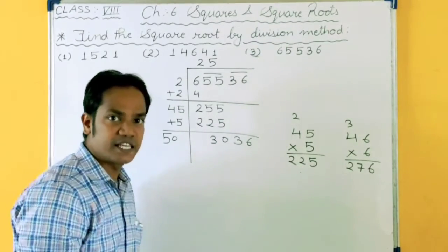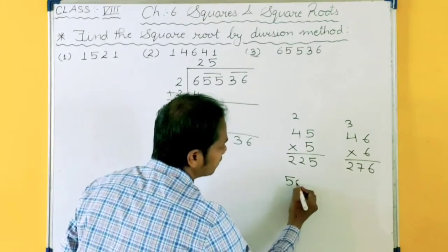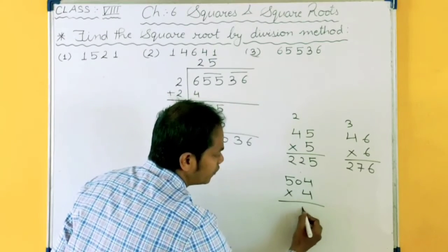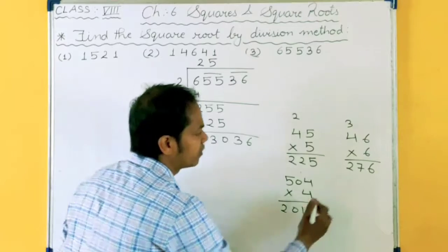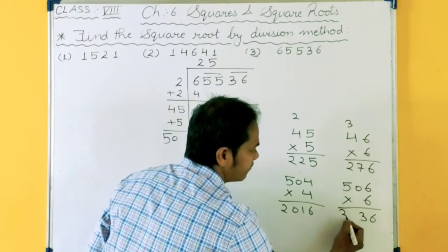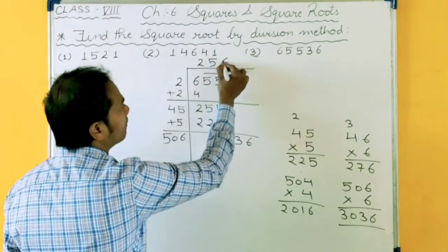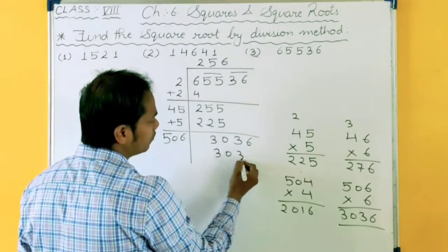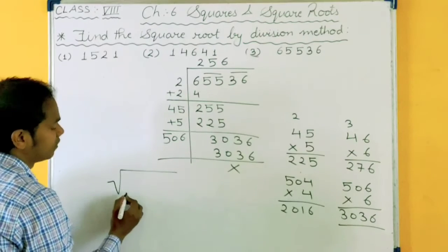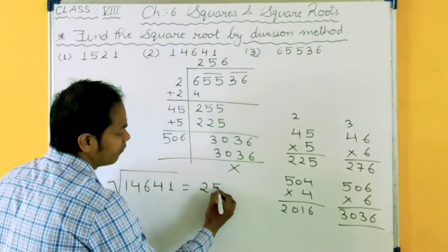At last you want 6. So 4 times 4 is 16, you are getting 6 at unit place. Then 6 times 6 is 36. So let's check by 4 and 6. 50 is there, I have taken 4. 4 times 4 is 16 and 4 times 5 is 20. This is much smaller. Let's check by 6. 6 times 6 is 36 and 6 times 5 is 30. Yes, it's matching. So 506 multiply by 6, this gives you 3036. So finally your answer will be, the square root of 65536 is 256.